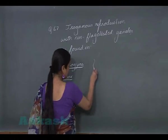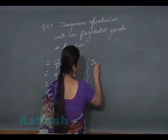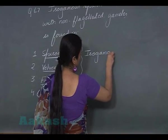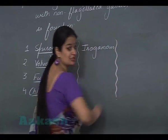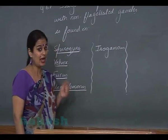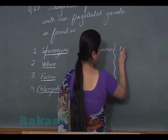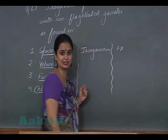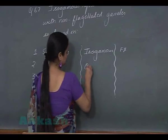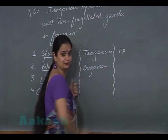Now let's discuss question number 67. In the case of Spirogyra, the type of sexual reproduction is isogamous — the two fusing gametes are morphologically similar and non-flagellated. In Volvox, sexual reproduction is oogamous, where male gametes possess flagella and the female gamete is non-flagellated.